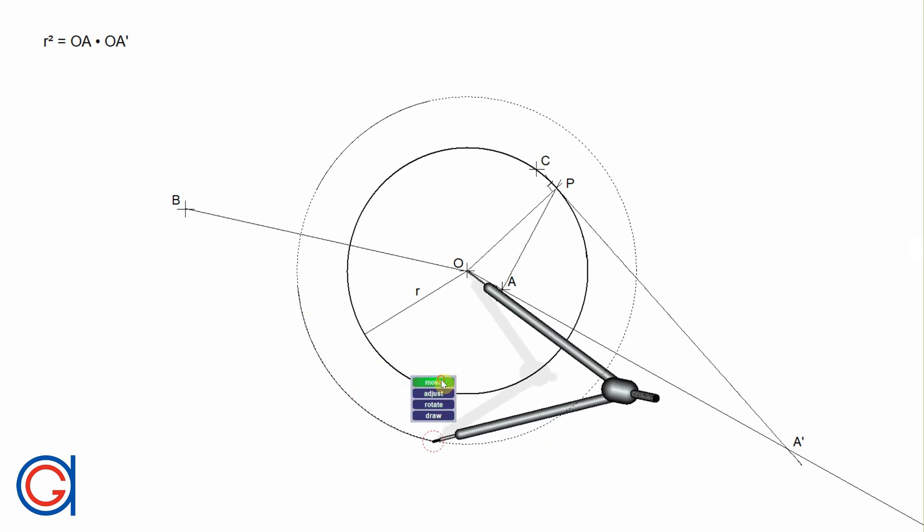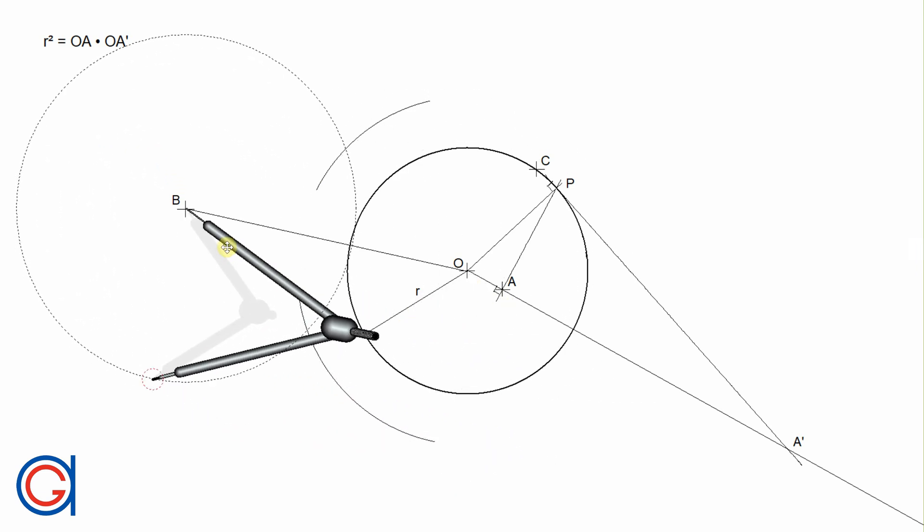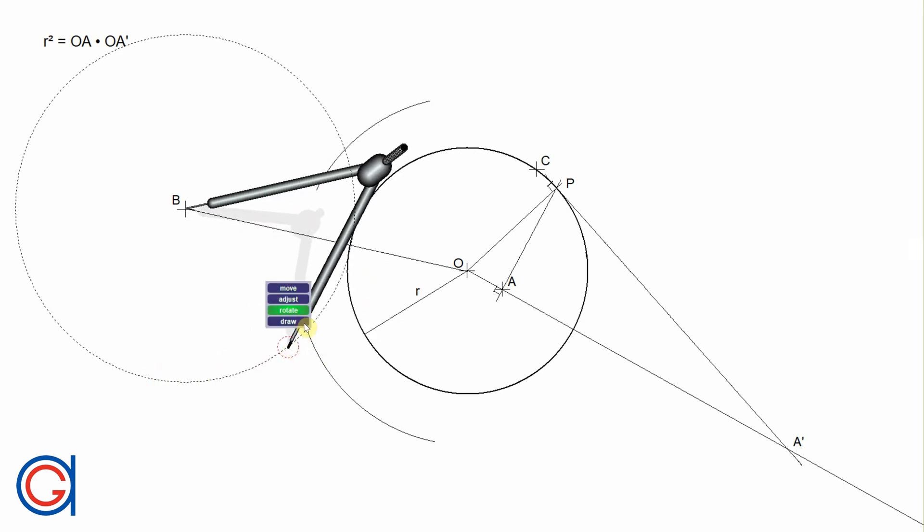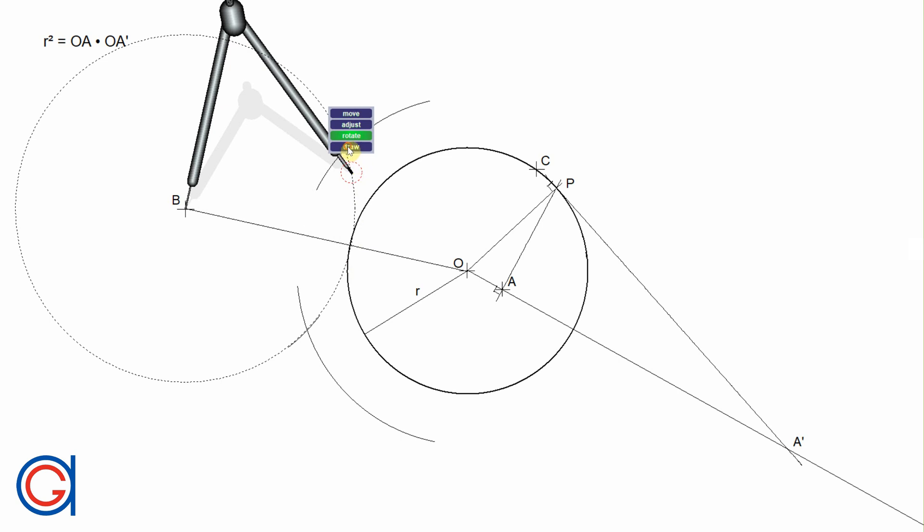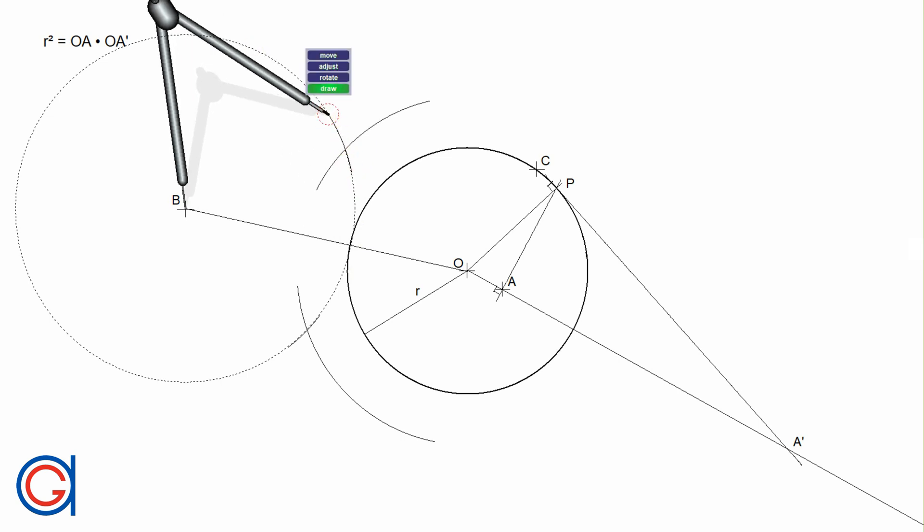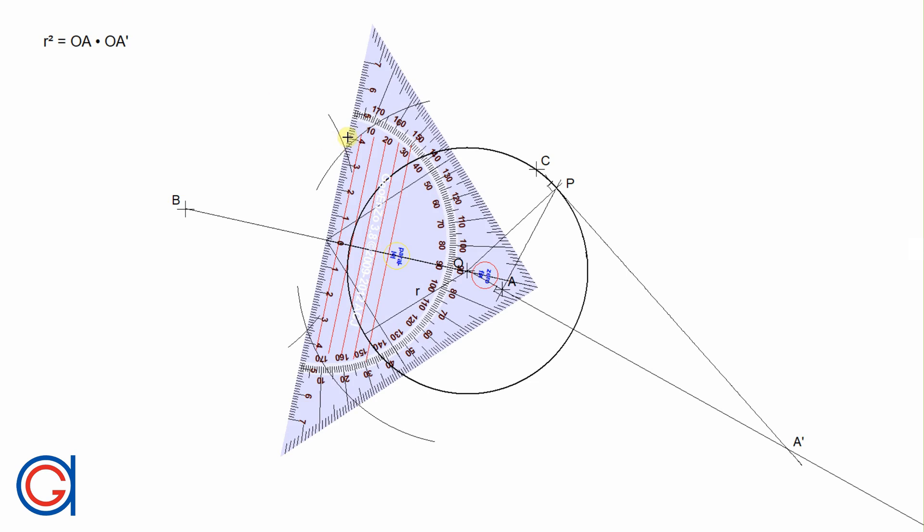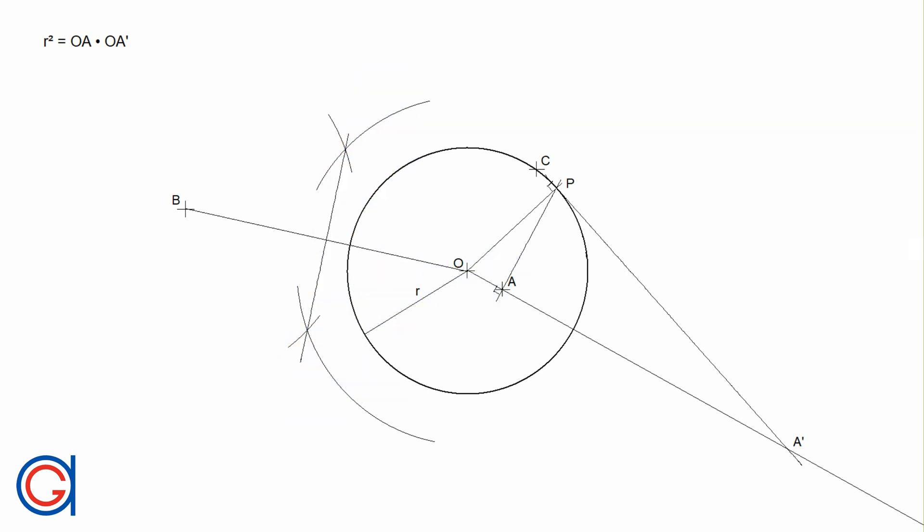And now with the same radius and setting the compass on point B, we are going to describe two new arcs cutting our previously drawn arcs as shown here. And now we will draw a line joining these two intersections and it cuts our line BO at half and getting a new midpoint M, which we will call M.